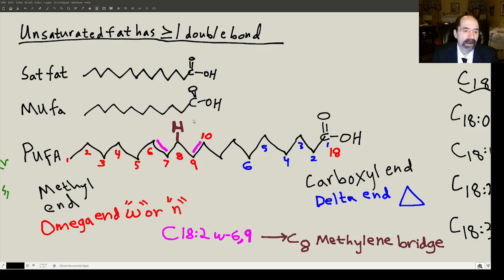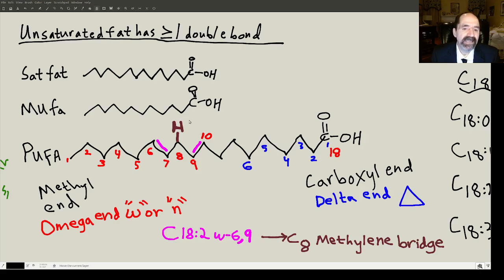That vulnerability to peroxidation is one of the major problems with PUFAs. The body does need them, but the best way to get them is to eat plants. We're going to go over some of the reasons why.